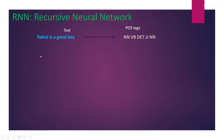When we are reading the sentence, we are reading it in a sequential order — we read Rahul first, then 'is', then 'a', then 'good', then 'boy'. So while reading 'is', we remember everything about Rahul. We can design a network which will mimic this same procedure.